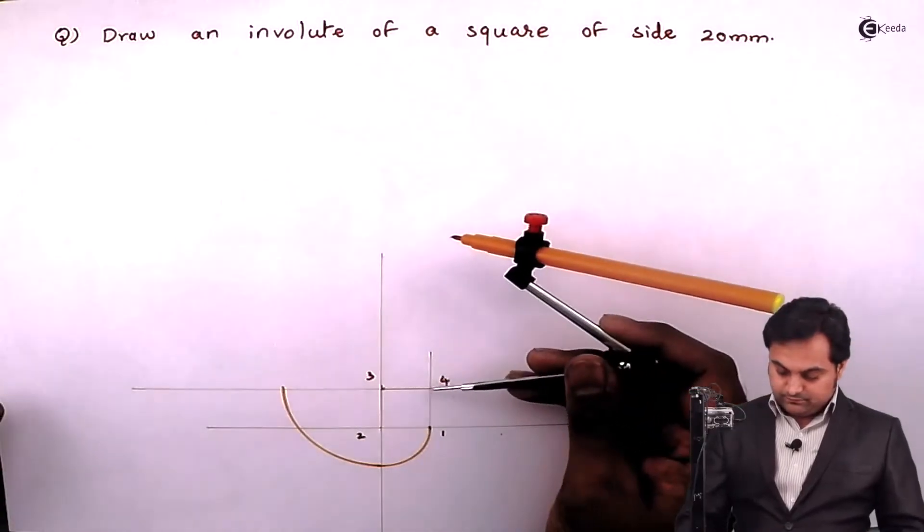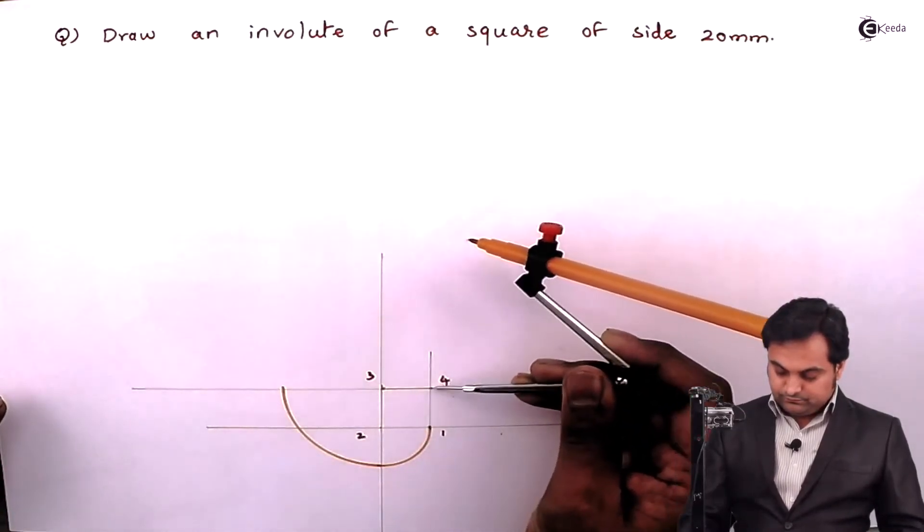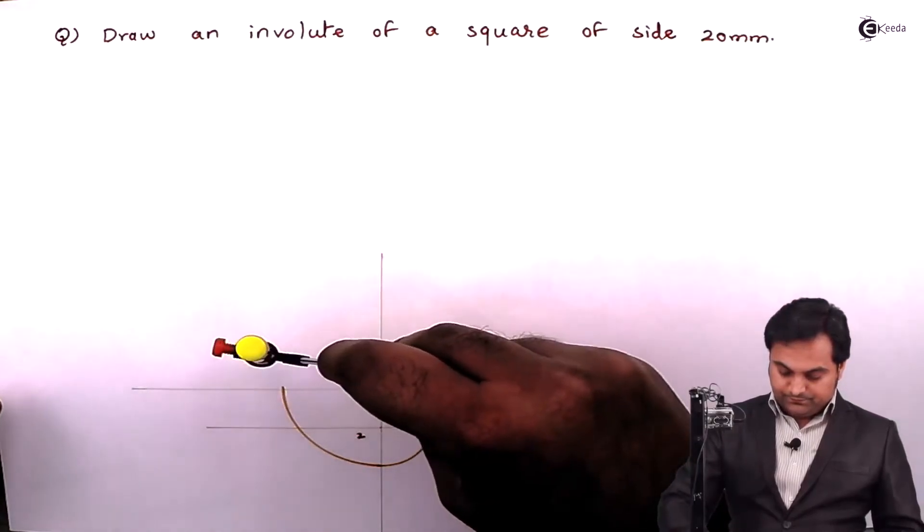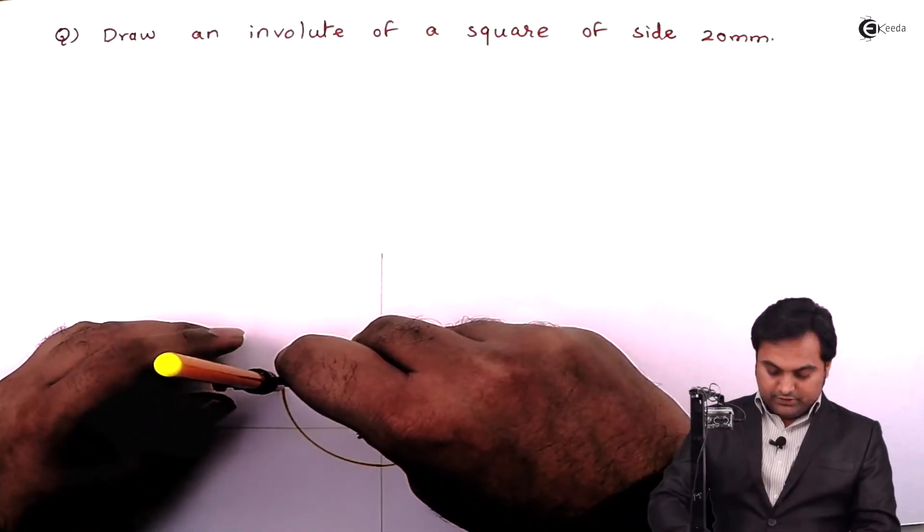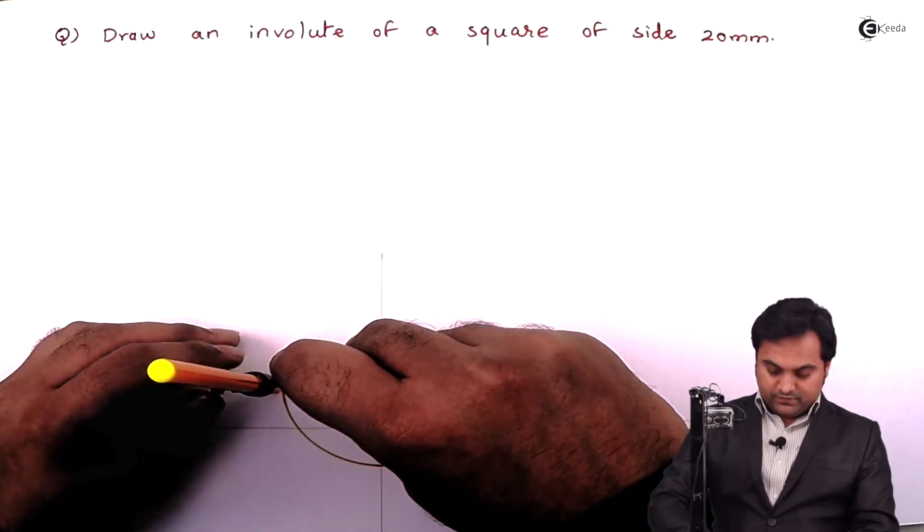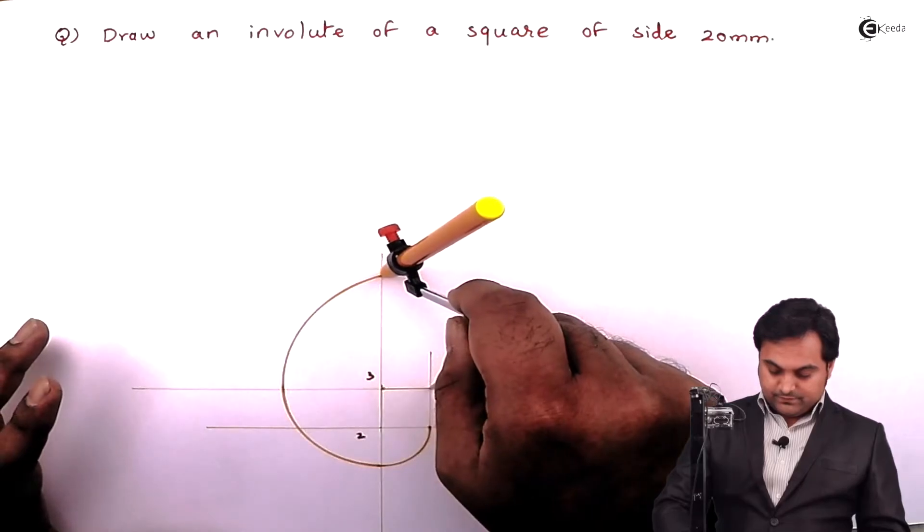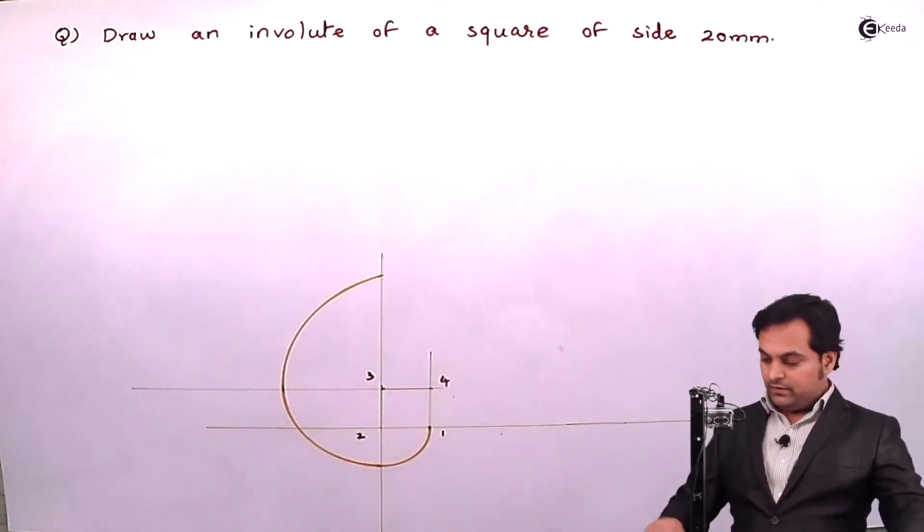After this, keeping it at point four, drawing a light arc where I had ended. Up to this is the radius distance.